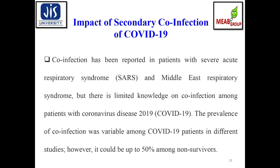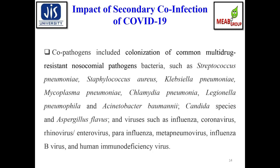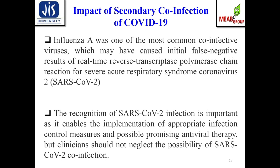Co-pathogens include multi-drug resistant nosocomial bacteria such as Streptococcus pneumoniae, Staphylococcus aureus, Klebsiella pneumoniae, Mycoplasma pneumoniae, Chlamydia pneumoniae, Legionella pneumophila, Acinetobacter baumannii, Candida species, and Aspergillus. Several viruses including influenza virus, coronavirus, rhinovirus, enterovirus, parainfluenza virus, metapneumovirus, influenza B virus, and immunodeficiency viruses are also involved in multi-drug resistant nosocomial co-infections.